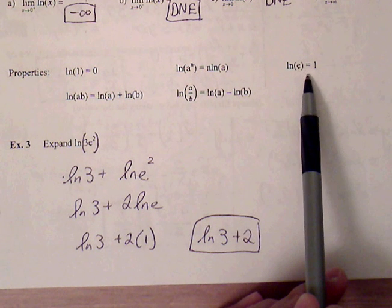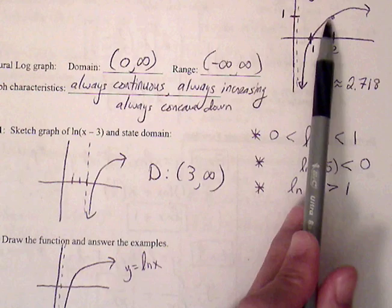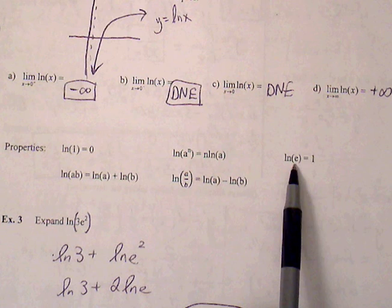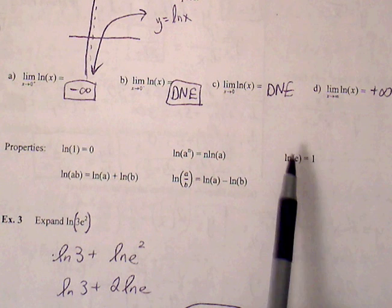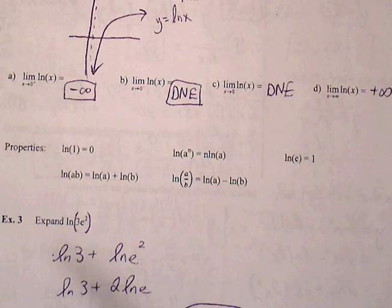And then finally, another value, natural log of E is equal to 1. You can look at the graph to confirm that. Also, this highlights the relationship between E to the X and LN of X. They are inverses of each other, so a composite function will cancel out to be just 1 there.